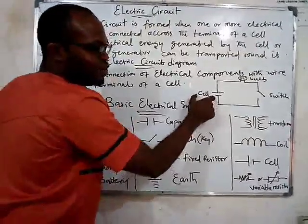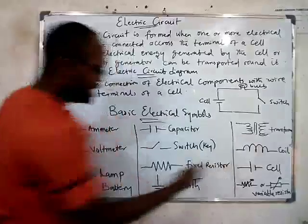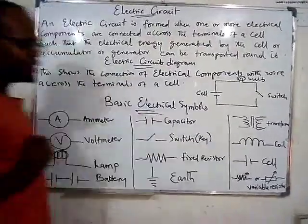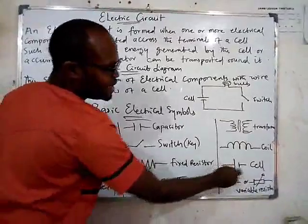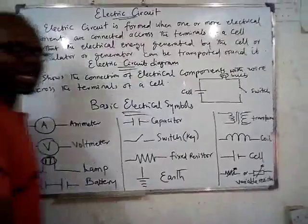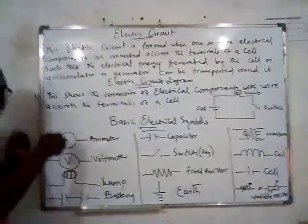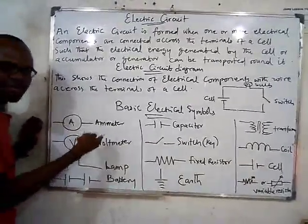You are supposed to know what these electrical symbols represent. Whenever you see a certain symbol, it represents a cell. Another symbol represents a switch — another name for switch is a key. If a cell is more than one, we call it a battery. So a cell and battery are the same thing, except that a battery is more than one cell. A circle with 'A' inside it is an ammeter, which is used in measuring current.